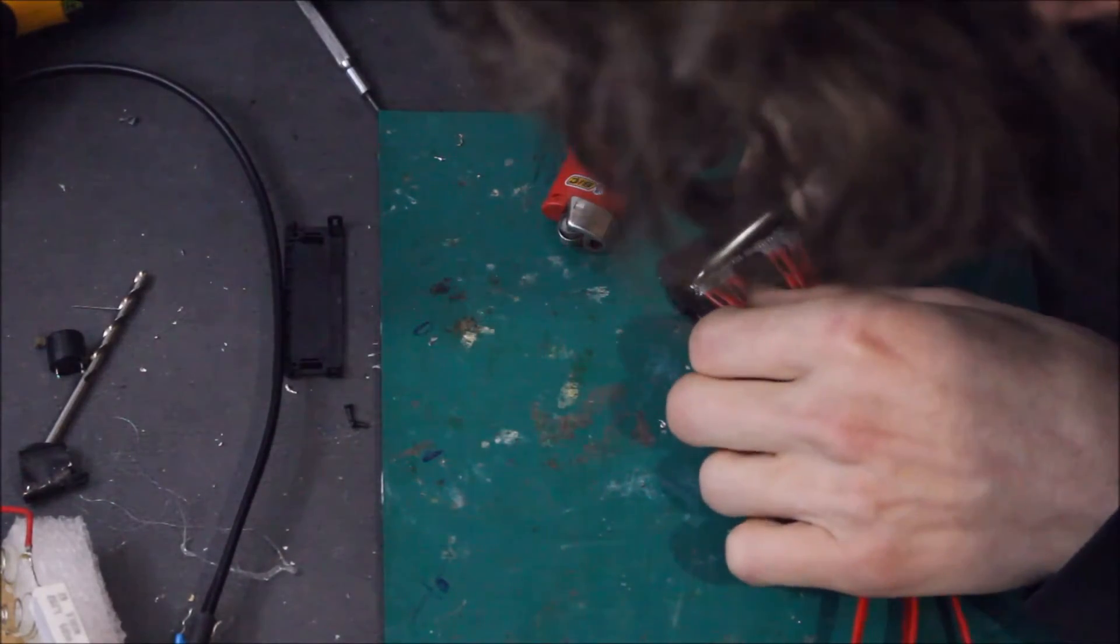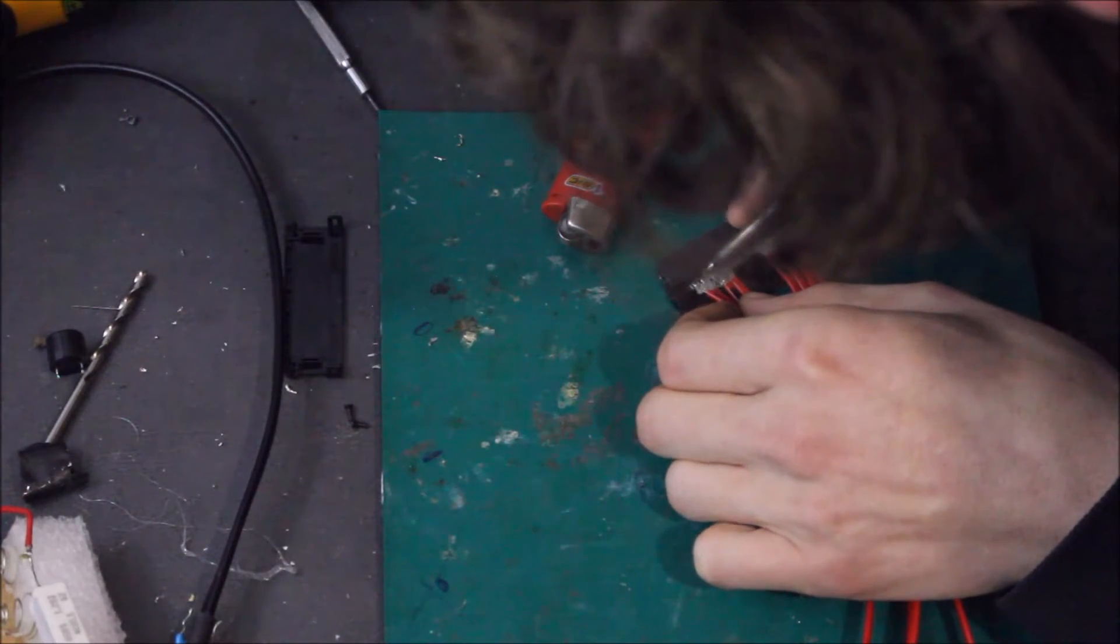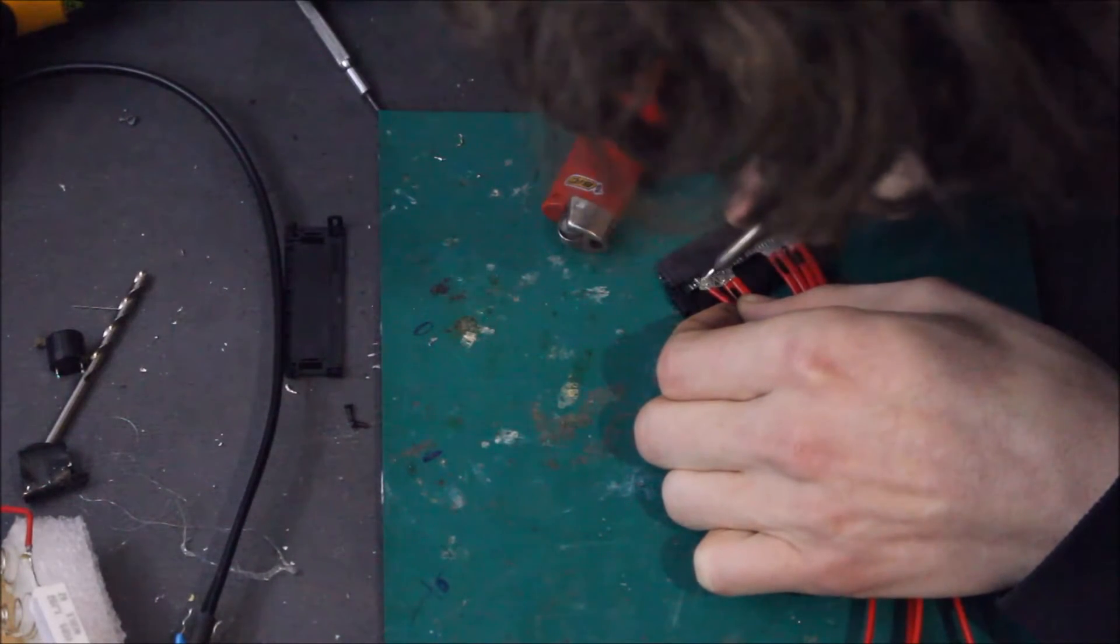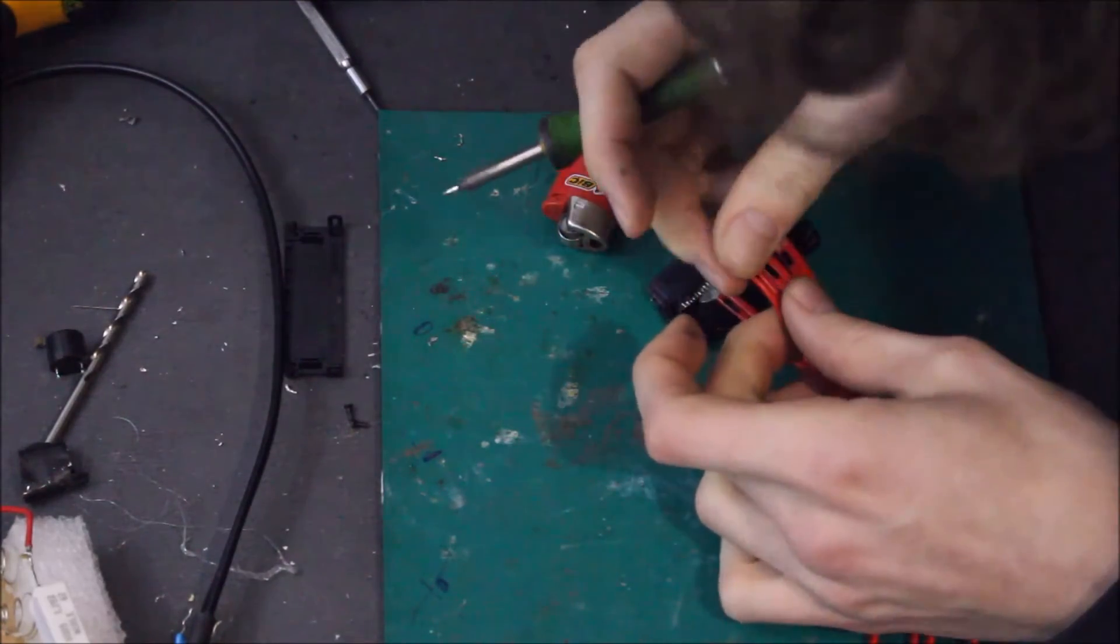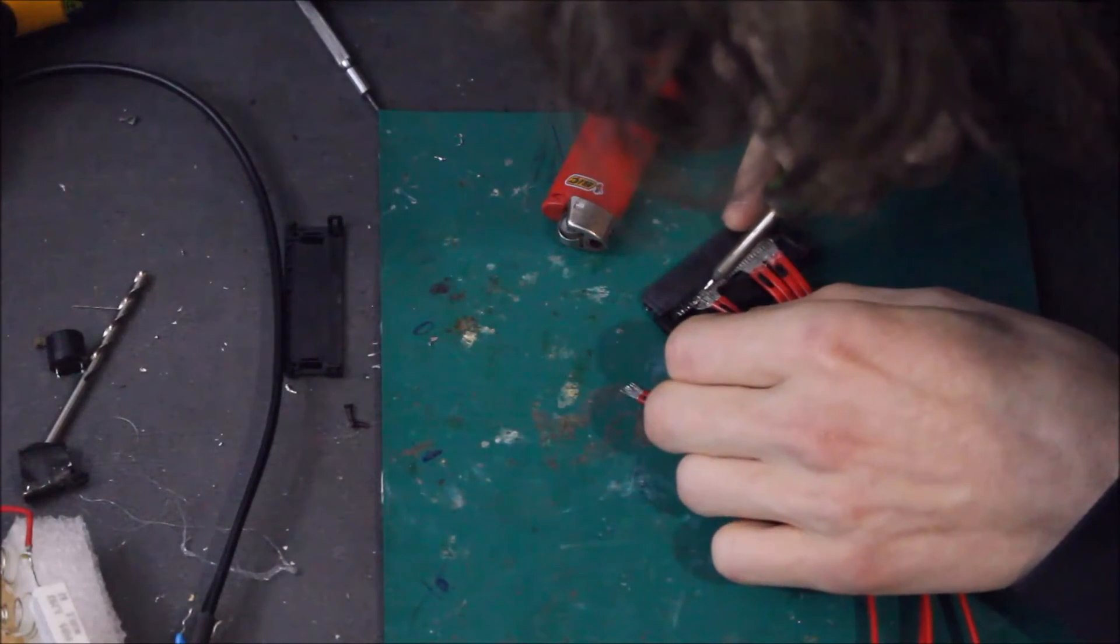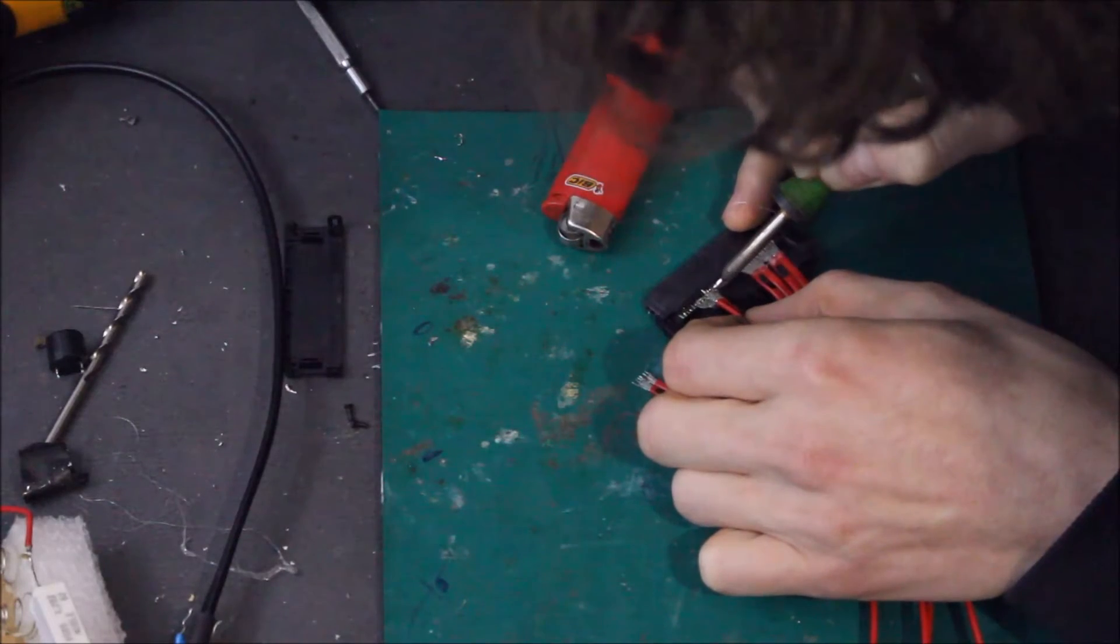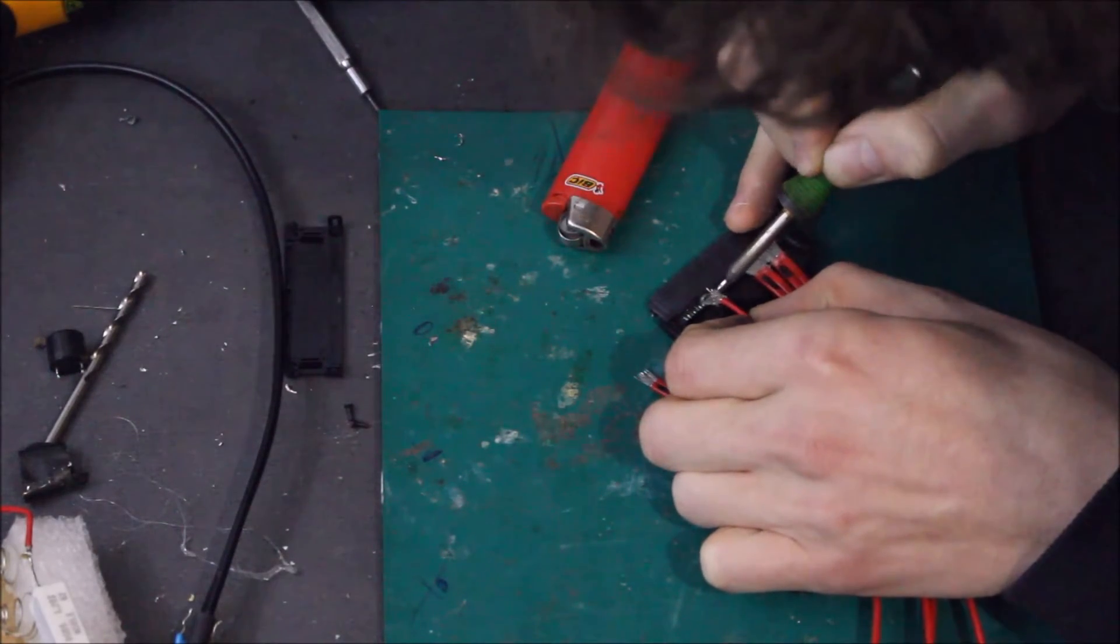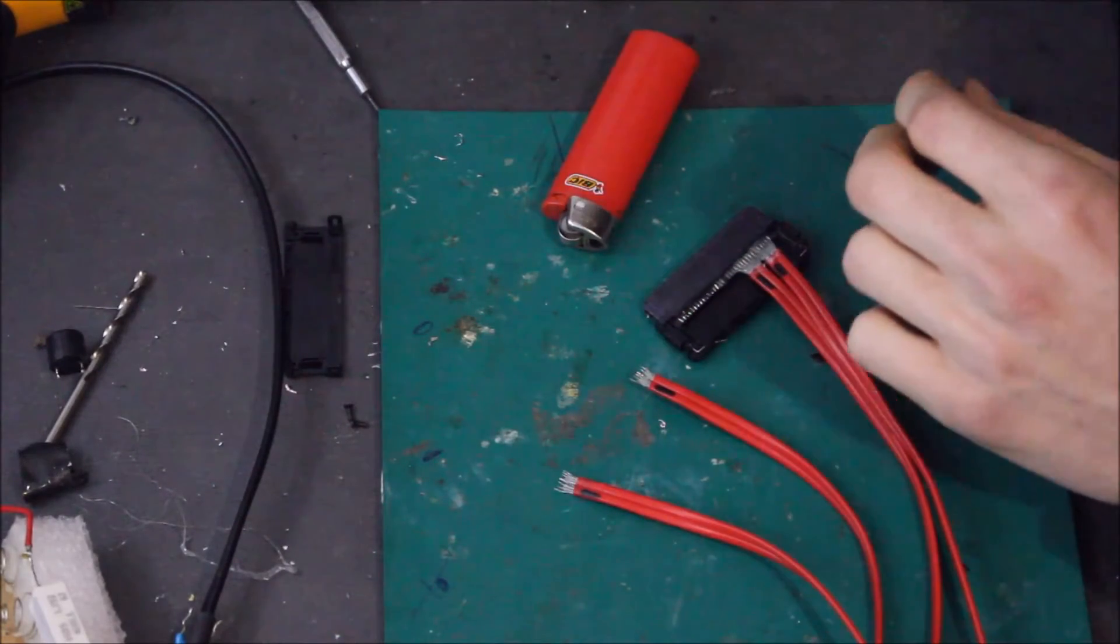Now, solder iron. This one is a 0.8 of a millimeter wedge tip, really good for doing this sort of work. I would definitely recommend something this small for this work.